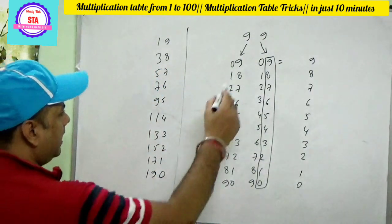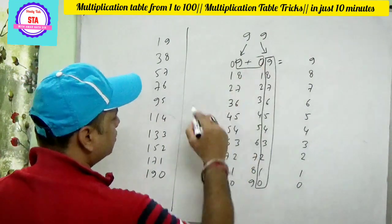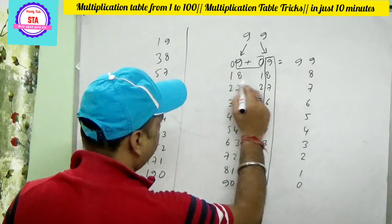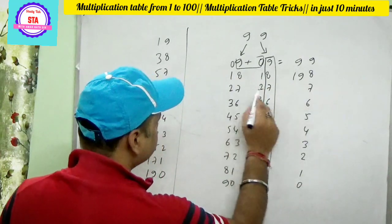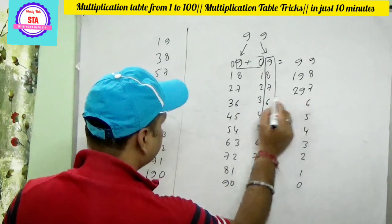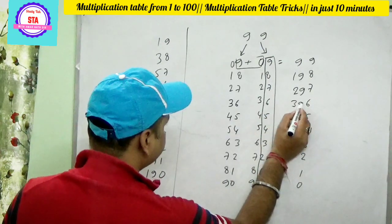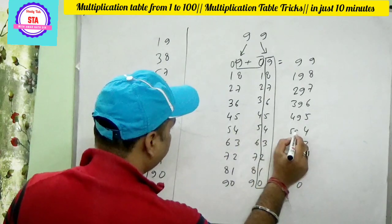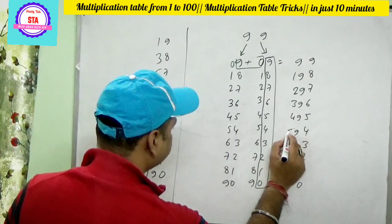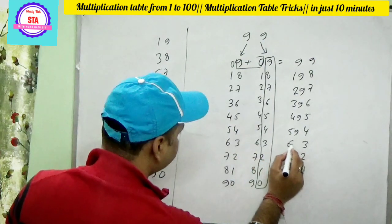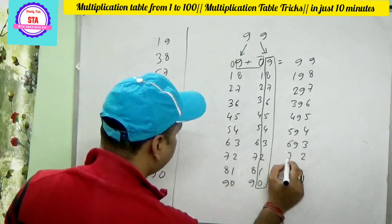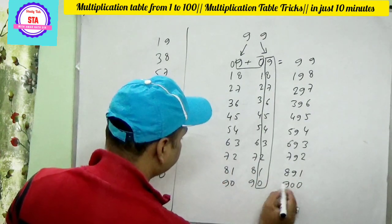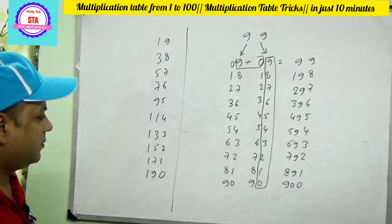Now add: 9 plus 0 is 9; 8 plus 1 is 9; 18 plus 1 is 19; then 29, 39, 49, 59, 69, 79 and 89; 90, 99. That's the table of 99.